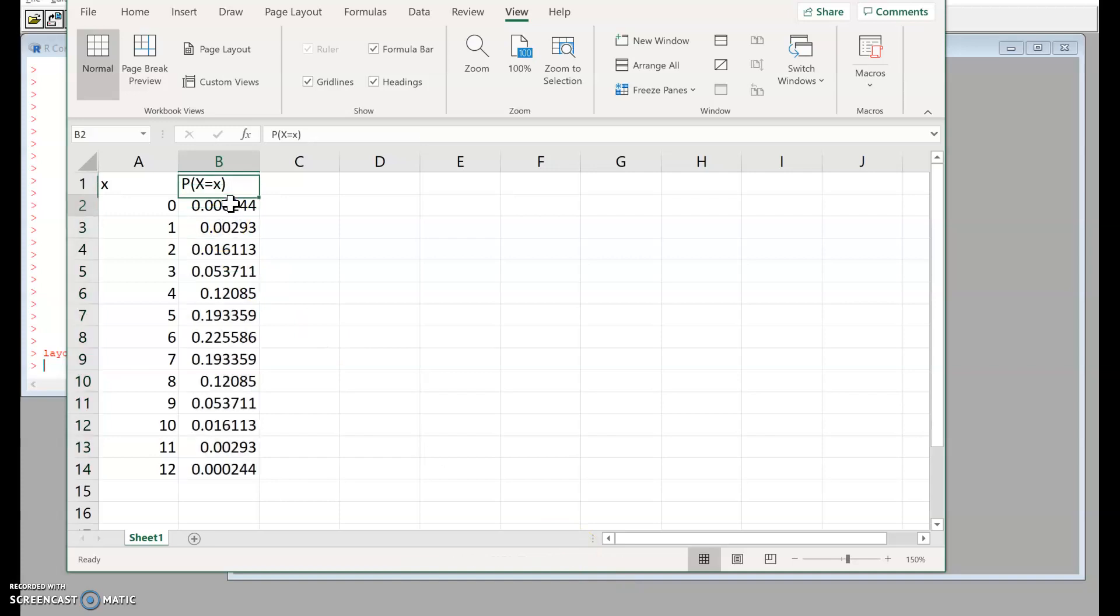If I add the extreme situations, I hold control down and select these additional ones. Excel adds them up 0.038 so roughly 4 percent. Let's act as if this is a 5 percent probability, giving us our extreme outcomes with probability 5 percent.